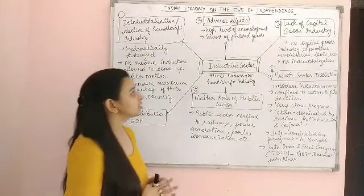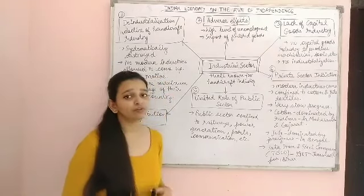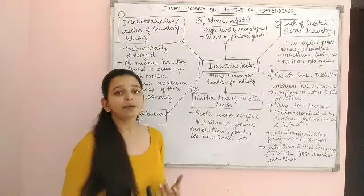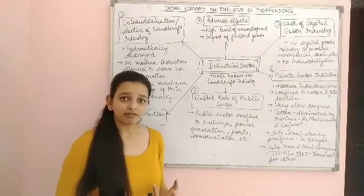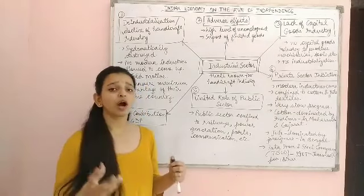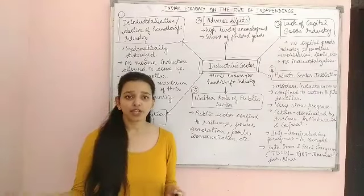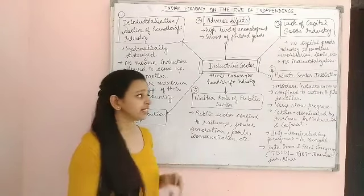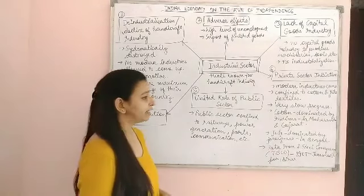So the industrial sector was very well known for its handicraft industry. In the handicraft industry, mainly you have cotton and silk, textile and metal works — in all of these India was very famous. Throughout the world there was demand for Indian goods; it exported to China, Iran, Iraq, and Persia. India had a lot of demand for its handicraft goods.